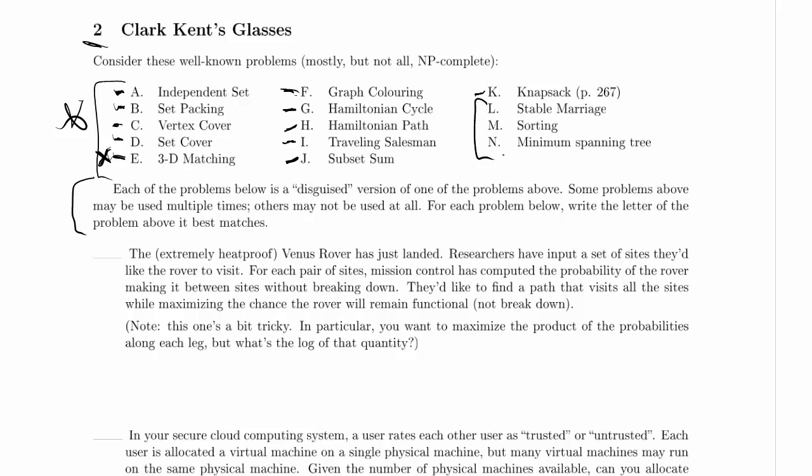On optimization versus decision versions: for independent set, the decision version asks if there's a set at least as large as k with no edges between nodes. The optimization version simply asks for the largest such set possible. For Hamiltonian cycle, it's not exactly an optimization problem — instead of asking yes or no whether a simple cycle exists visiting every node, the solution version asks you to produce that cycle: list the nodes in order, starting and ending at the same node, with an edge between each consecutive pair.